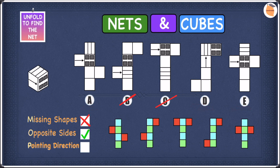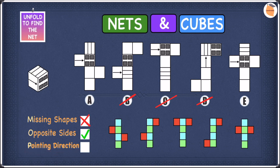Let's check D and E. In D the arrow is pointing towards the stripy pattern, even though it's meant to point towards the window. Because it's pointing in the wrong direction at the wrong shape, we can cross off D. Moving on to E — the arrow is pointing towards the window, so it's fine. After applying pointing directions we're still left with two options, and there's still one thing missing in terms of pointing directions: the stripy pattern.